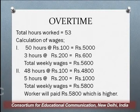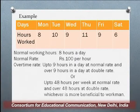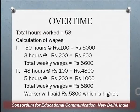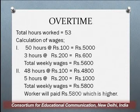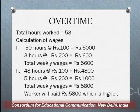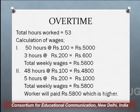The second criteria is up to 48 hours per week normal rate and beyond 48 hours double rate, whichever is beneficial to the worker. In this case, for 48 hours at 100 rupees equals 4800, and beyond 48 hours — that is 5 hours at 200 rupees — comes to 1000. So total weekly salary is 5800 as per this criteria. The worker will be paid 5800, which is higher and more beneficial to the worker.